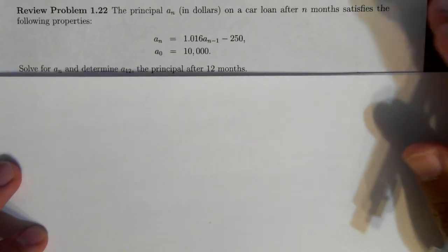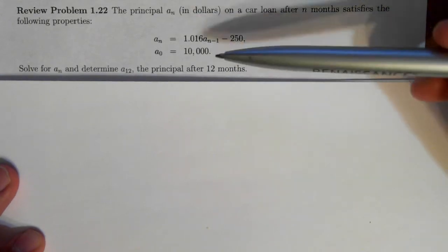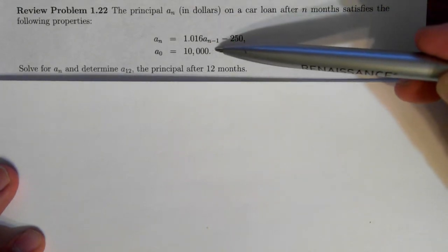Okay, the principal on a car loan after n months satisfies the following properties. The loan is initially for $10,000.